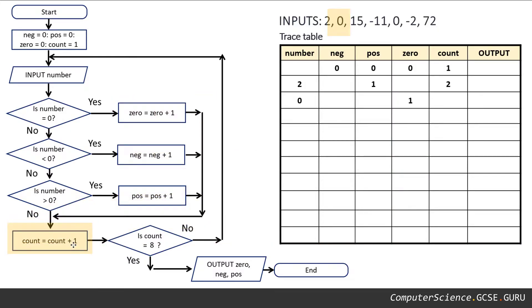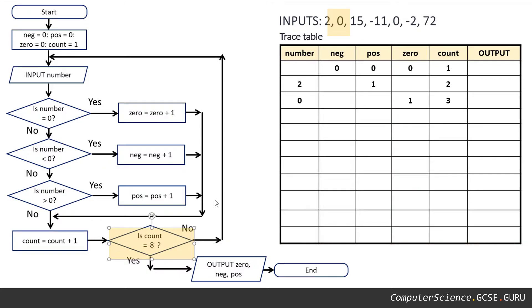Following the flowchart through, our count variable equals itself plus one. Count was two, add an extra one, it becomes three. Is count equal to eight? No, it's currently three. So round we go again to our next input.